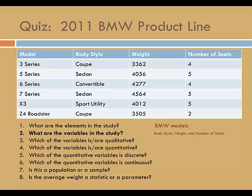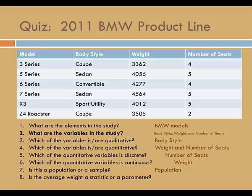Which of the variables is qualitative? A qualitative variable categorizes the elements — body style categorizes the models. Which of the variables are quantitative? Weight and number of seats. Which of these is discrete? Since we count to get the number of seats, number of seats is discrete. Since we measure to get weight, weight is continuous. Should we consider this a population or sample? Since this is every BMW model from 2011, it's a population, and therefore any summary would be a parameter.